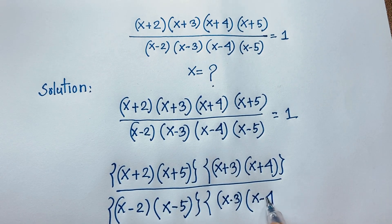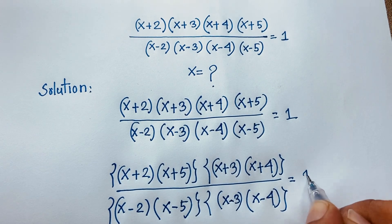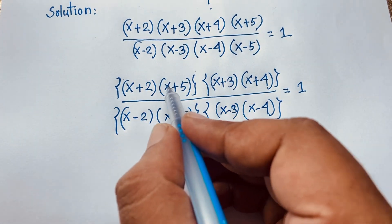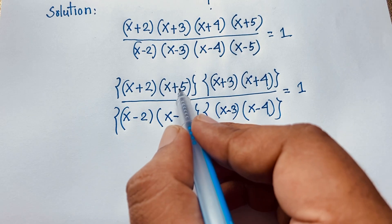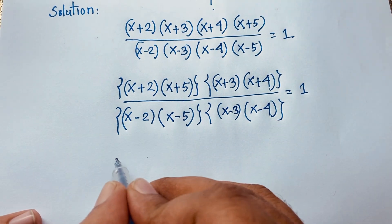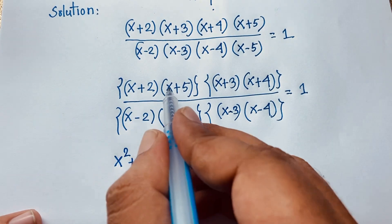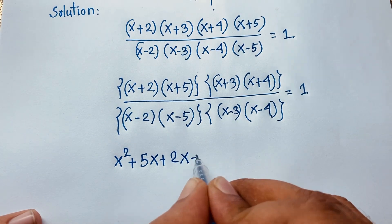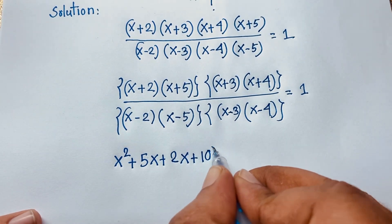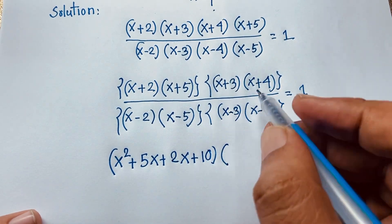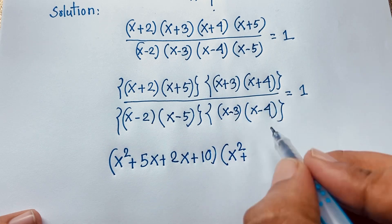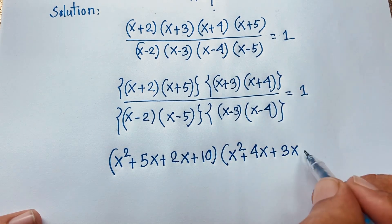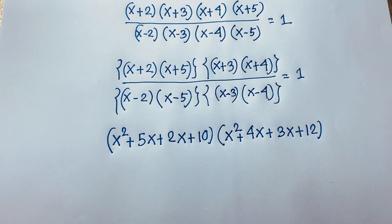Now (x+2)(x+5) equals x² plus 5x plus 2x plus 10, which gives x² + 7x + 10. And (x+3)(x+4) equals x² plus 4x plus 3x plus 12, which gives x² + 7x + 12.